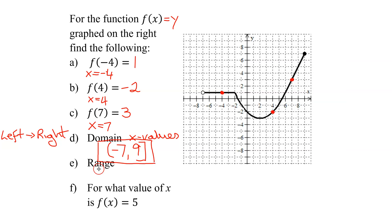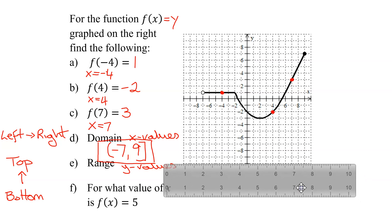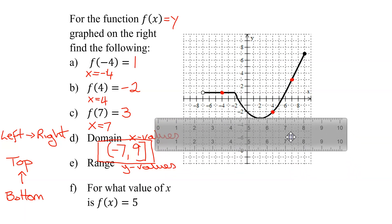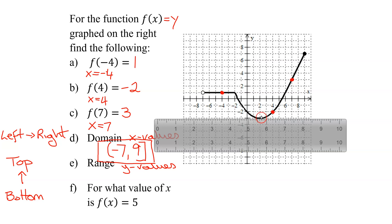So now we need to work on the range. Remember, the range comes from the y values. To read the range, you always start at the bottom of the graph and work your way up to the top. I'm going to use a ruler coming in from the bottom. Is there a graph right here? No, so I keep moving the ruler going up. This is the first point I get to on the graph. Since there's a point here, it has to be included in my range. And what's its y value? Halfway between negative 2 and negative 4 is negative 3. So my range starts at negative 3. Since there is a point when y equals negative 3, I use a square bracket.